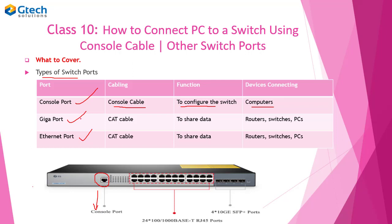The second port is the gigabit Ethernet port or giga port. For the gigabit Ethernet port, we are going to use a CAT cable — a category cable. The purpose of this gigabit Ethernet port is to share data between devices. The devices that connect to this gigabit Ethernet port are a router, switches, and PCs.